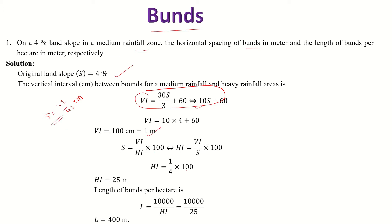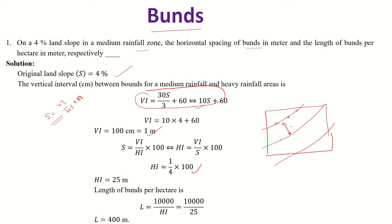Based on this formula, you will get the horizontal interval and the length of the bund. The length of the bund is the total contour length — the horizontal distance between two bunds is the horizontal interval. Area equals length into distance, where the distance is the horizontal interval. For one hectare, which equals 10^4 square meters, L into horizontal interval equals 10^4, so L equals 10^4 divided by the horizontal interval.